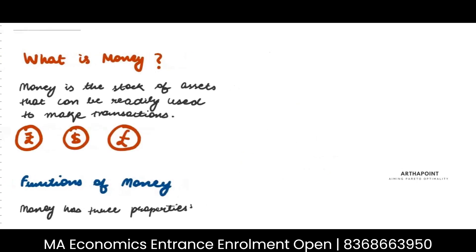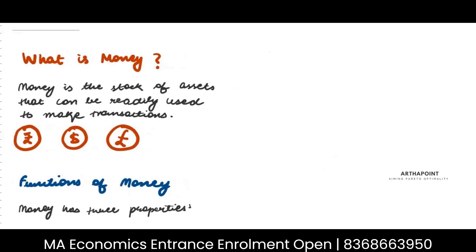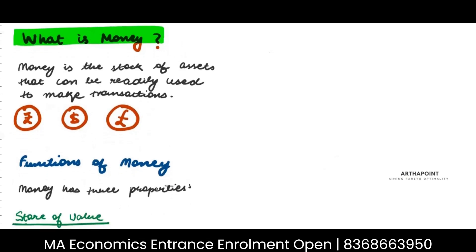Let's see the first part. Today we will understand what is money. Money is basically anything that can be used to make transactions — any asset that can be used to make transactions. In the real world today, rupees, dollars, pounds — all of this is money. Unlike the world before, where commodities were used as money.